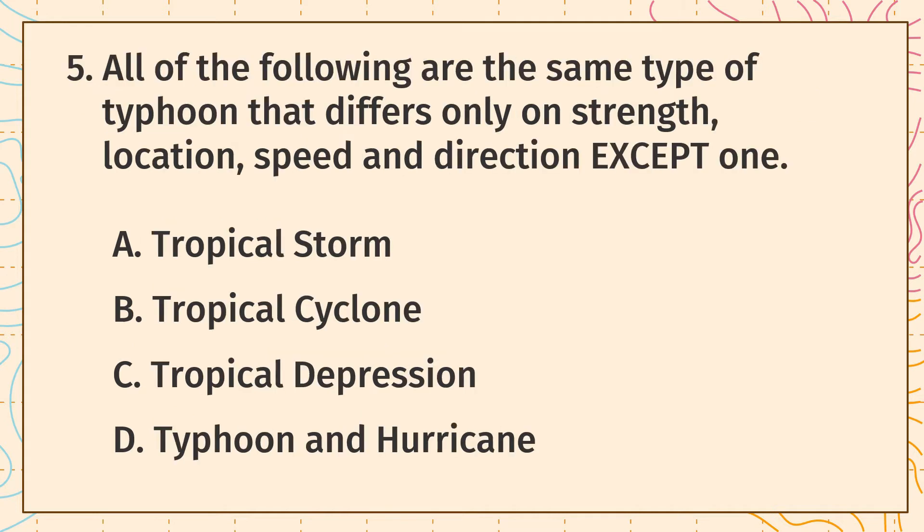Question 5: All of the following are the same type of typhoon that differs only on strength, location, speed, and direction, except: A. Tropical storm. B. Tropical cyclone. C. Tropical depression. D. Typhoon and hurricane.